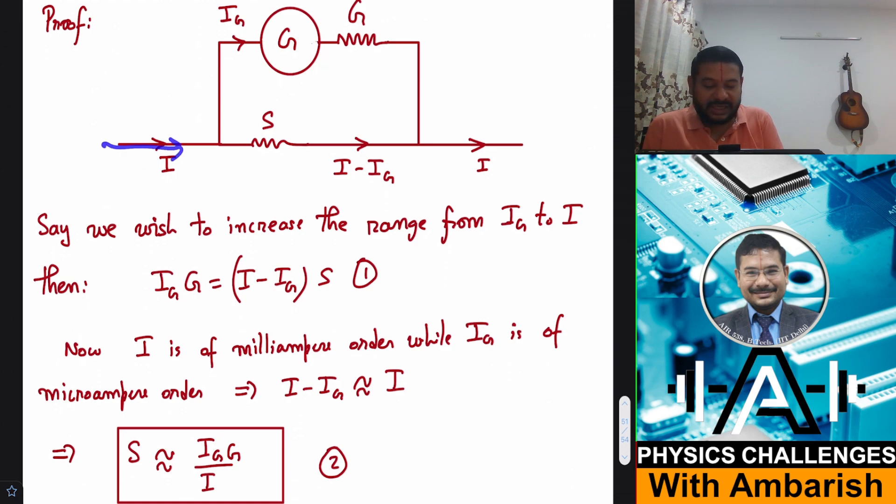So suppose I is the current going through this and IG is the full scale deflection current, then through the shunt the current flowing will be I minus IG, where I is the range to which we have converted the galvanometer into ammeter. So equating the potential difference through these two paths, I can say IG into G should be equal to I minus IG into shunt, and that gives me the value of shunt.